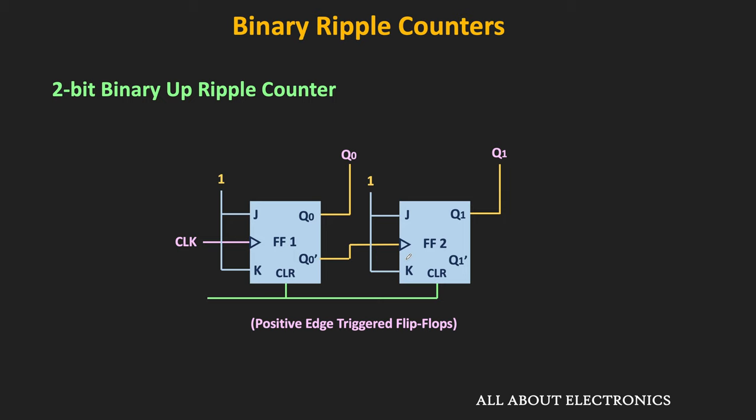So far, the counters have been designed with JK flip-flops in toggle mode. But they can also be designed using T flip-flops and D flip-flops. To use the T flip-flop in toggle mode, the T input should be connected to logic 1, since when T equals 1 the flip-flop operates in toggle mode and the output changes at every clock edge. This is the 2-bit up counter using positive-edge-triggered T flip-flops, where the Q-bar output of the first flip-flop is connected to the clock input of the next.